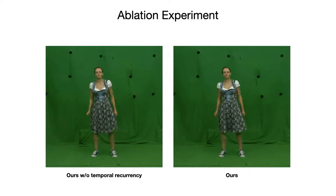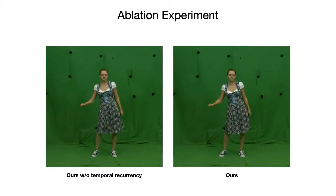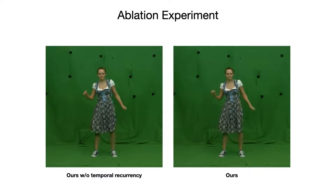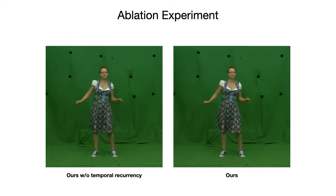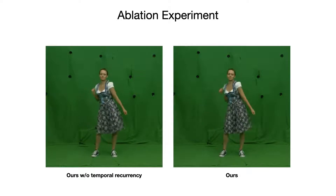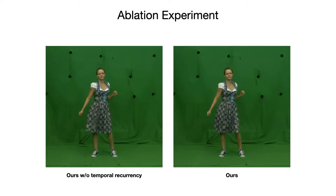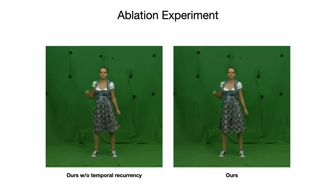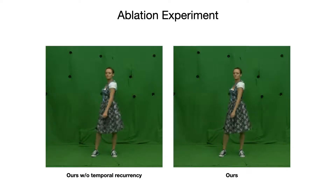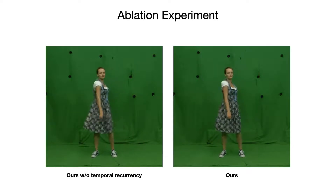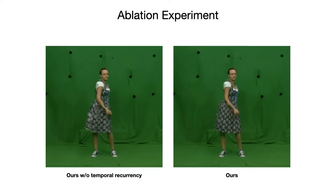Here we demonstrate the effect of sequential execution with recurrent backfeeding compared to a frame-by-frame generation setup. Only by including knowledge about the previous state of deforming garment is our method able to generate temporally coherent video results.